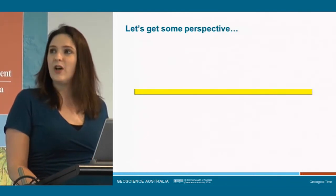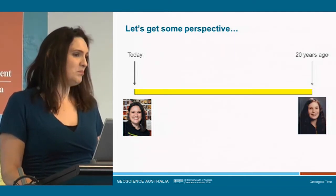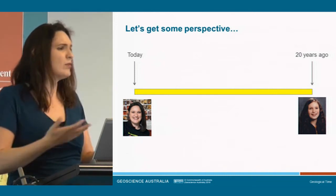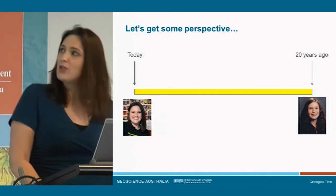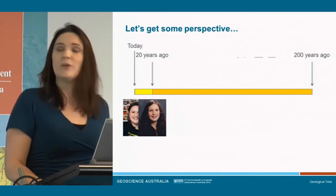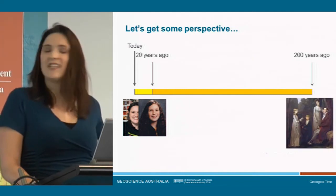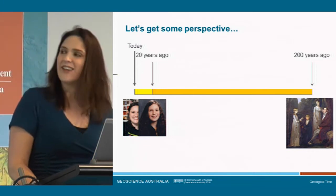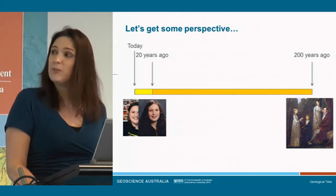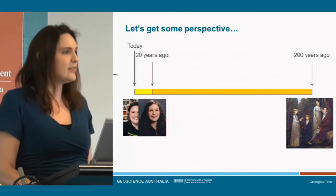So first we'll get some perspective. Take this yellow bar: at one end we have today, at the other end we have 20 years ago. Twenty years is an amount of time we can all appreciate — it's well within a human lifespan. If we multiply by 10, we're talking about 200 years. That's the early 1800s, horses and carts. A lot happens in 200 years, but it's still an amount of time we can appreciate.